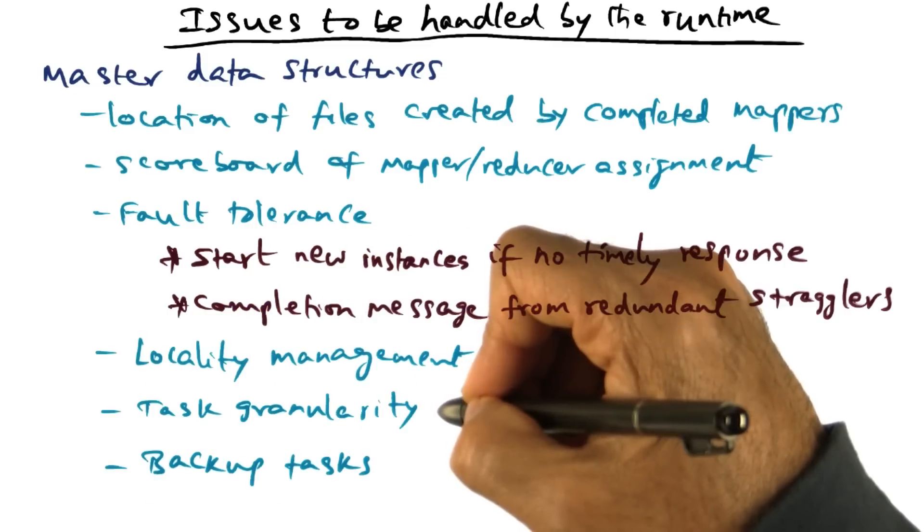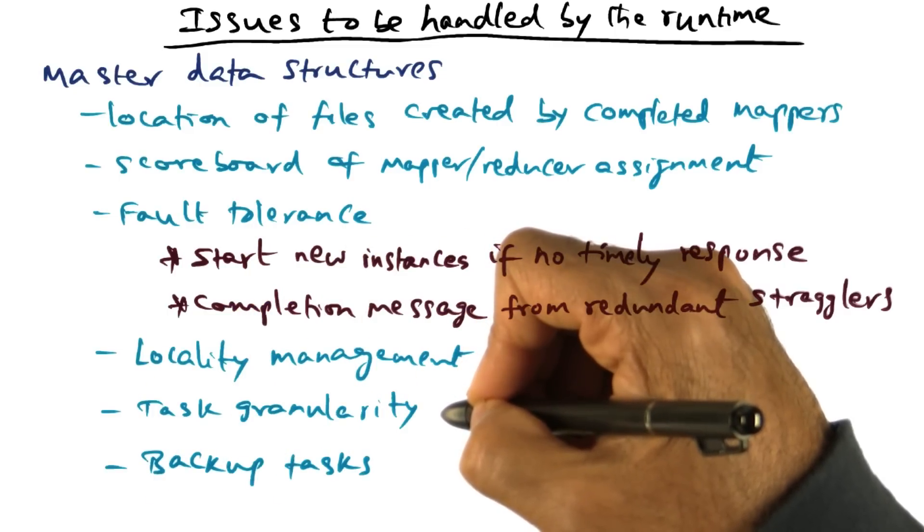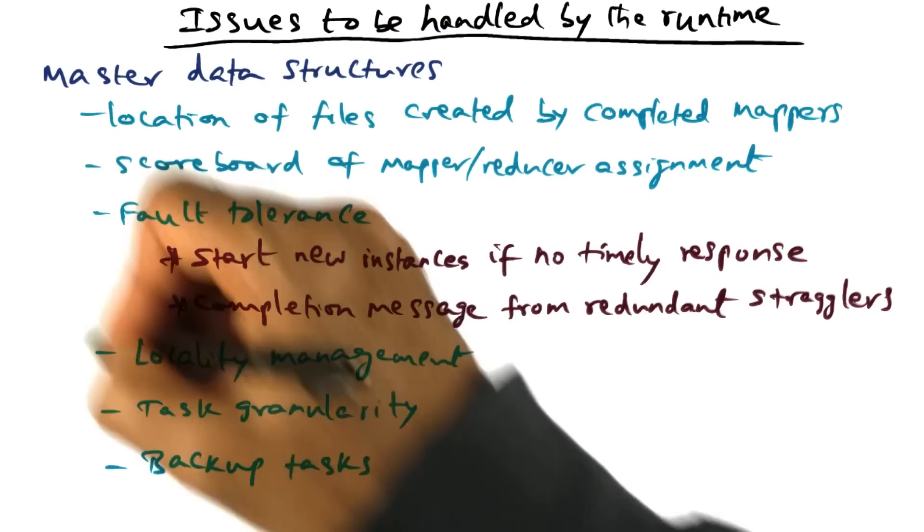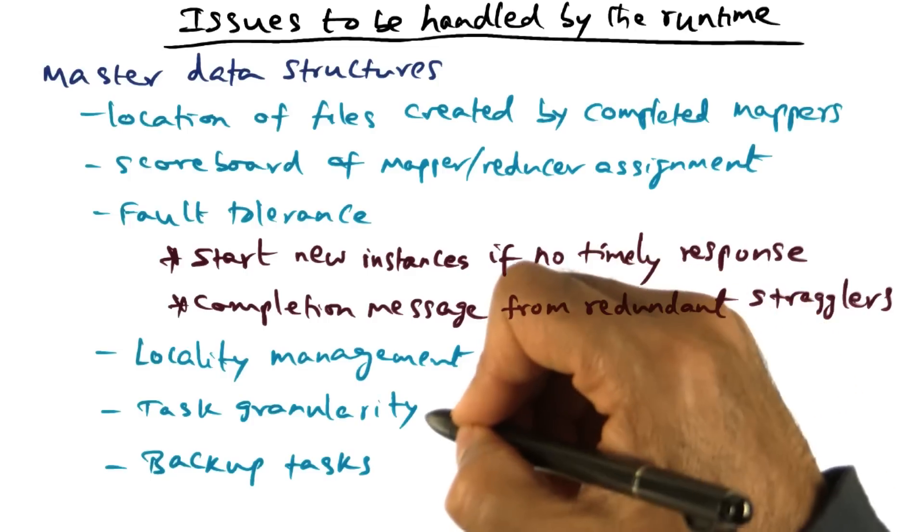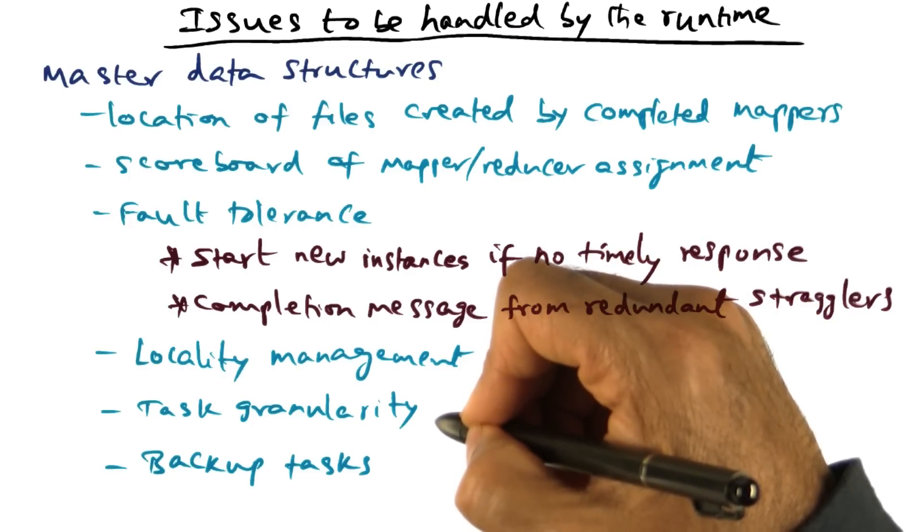Task granularity is another important issue. As I mentioned, the number of nodes available in the computation cluster may be less than the sum m plus r, where m is the number of input splits and r is the number of reducer splits. And it is the responsibility of the programming framework to come up with the right task granularity so that there can be good load balance of the computational resources.